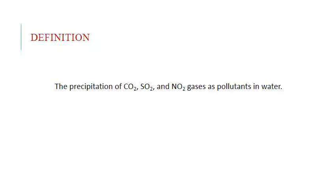Rain water is acidic in nature because of the presence of Carbon Dioxide in the atmosphere. Suppose in our atmosphere, instead of Carbon Dioxide, if SO2 and NO2 are present, then the pH of rain water gets further decreased. We have 3 pH ranges.